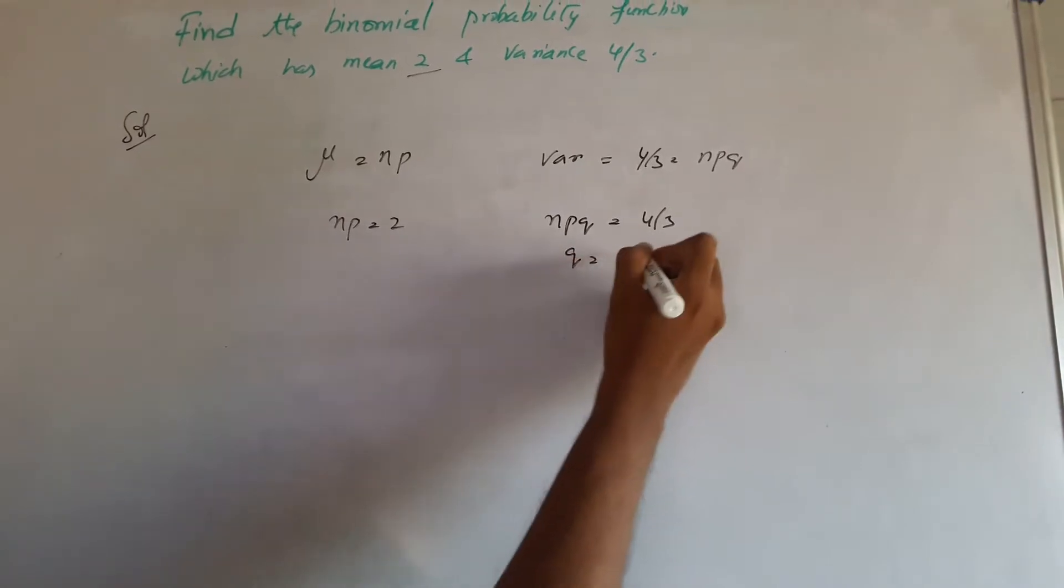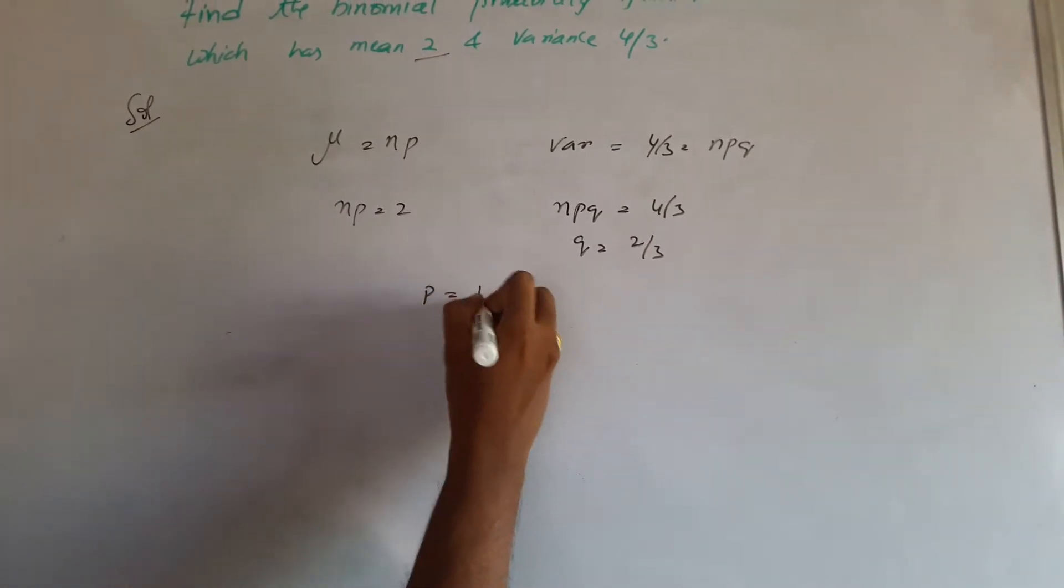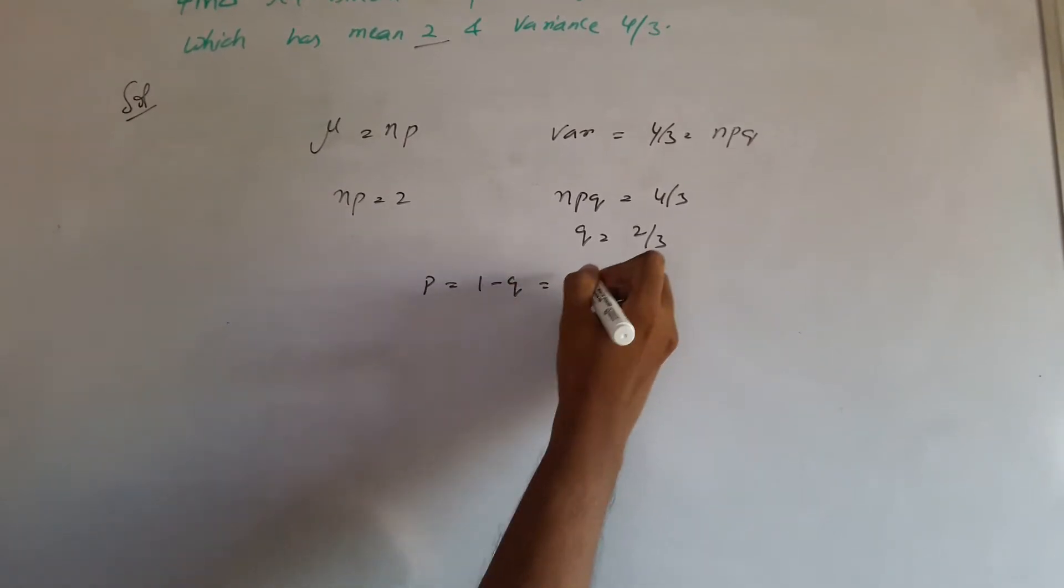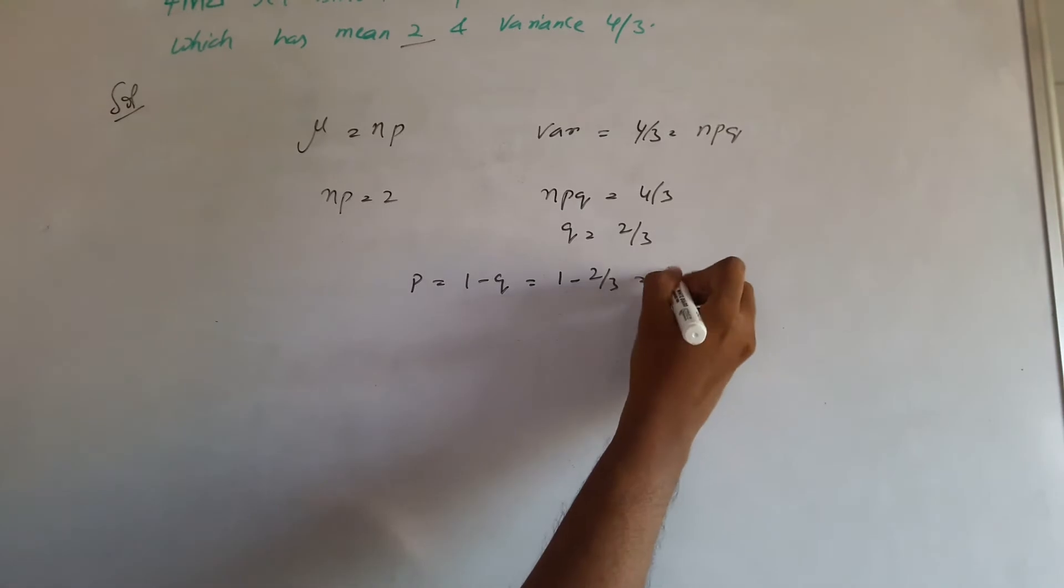We have npq, so q is equal to 2 by 3. We can obtain p as 1 minus q, that is 1 minus 2 by 3, which equals 1 by 3.